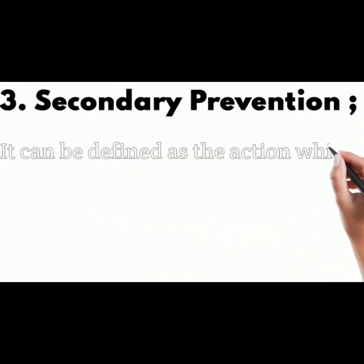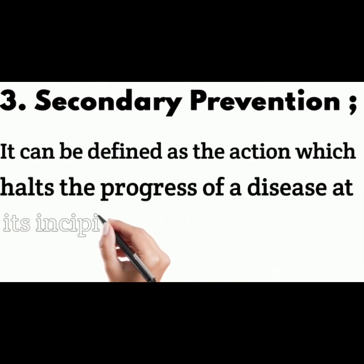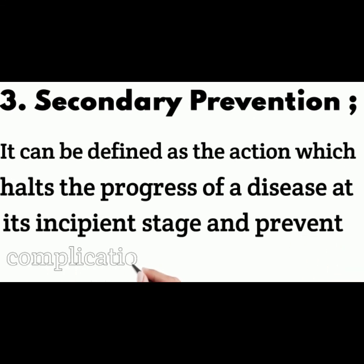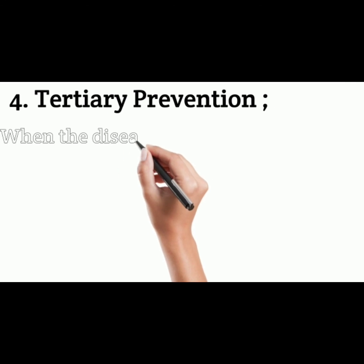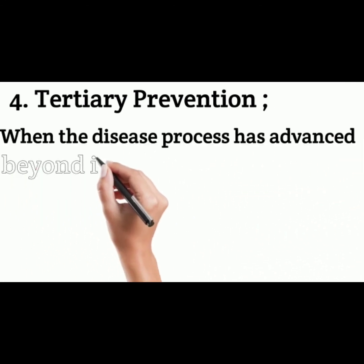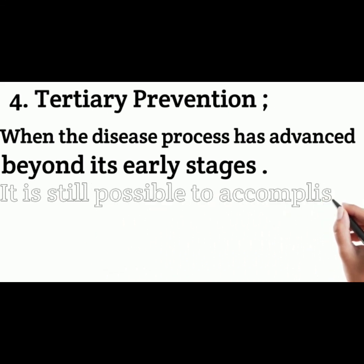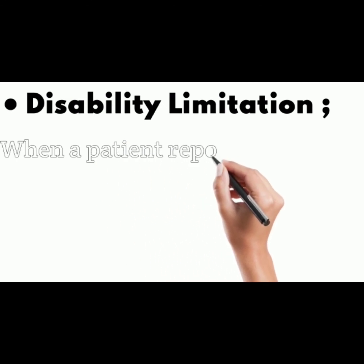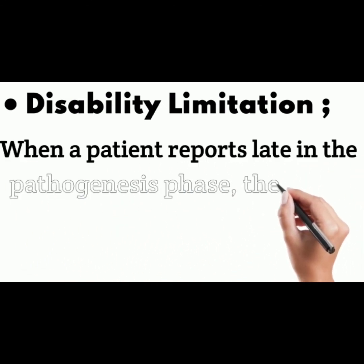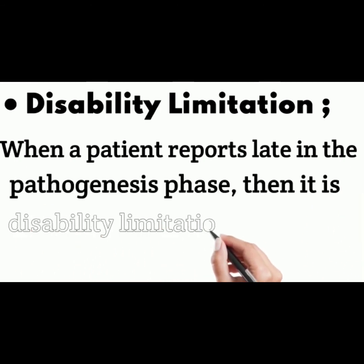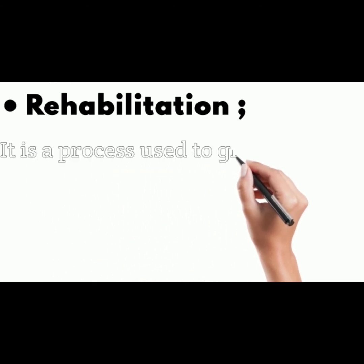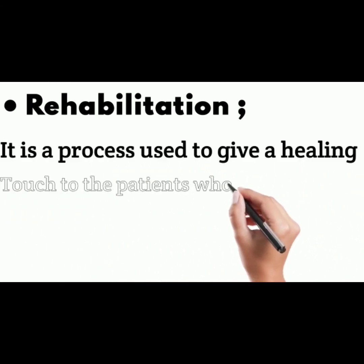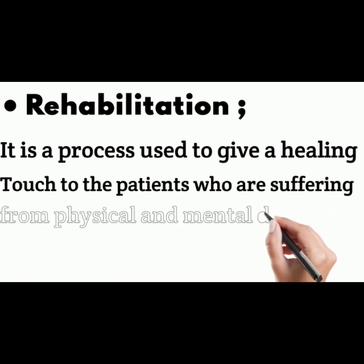Third is secondary prevention, defined as action which halts the progress of a disease at its incipient stage and prevents complications. Fourth is tertiary prevention — when the disease process has advanced beyond its early stages, it is still possible to accomplish prevention through what is called tertiary prevention. It includes disability limitation and rehabilitation. Disability limitation applies when a patient reports late in the pathogenesis phase. Rehabilitation is a process used to give a healing touch to patients who are suffering from physical and mental disorders or addiction.